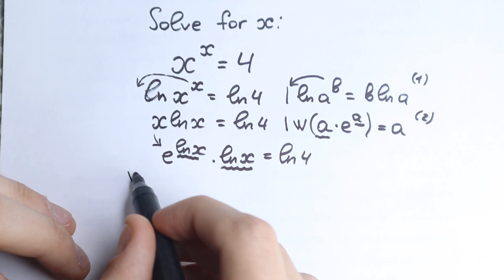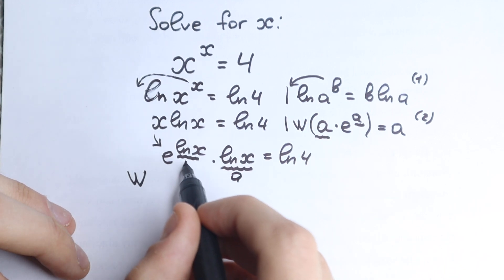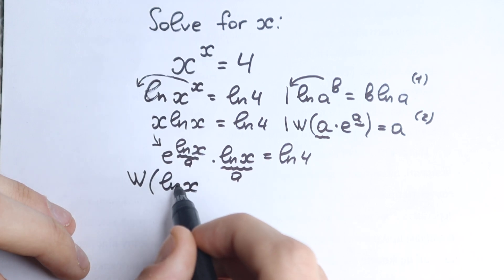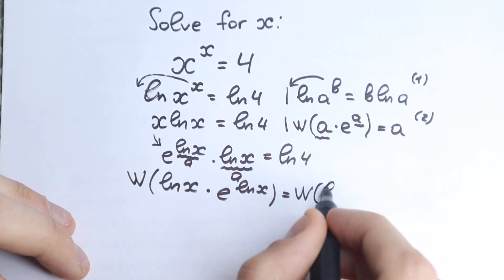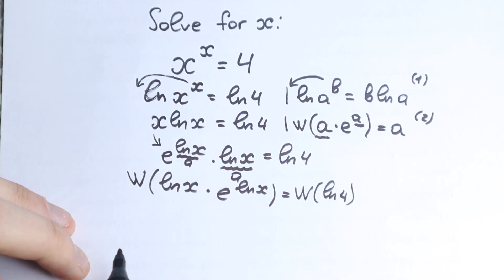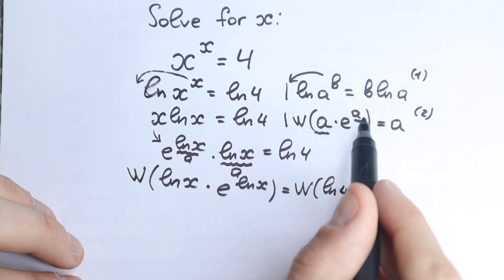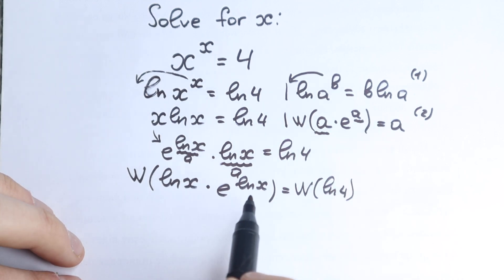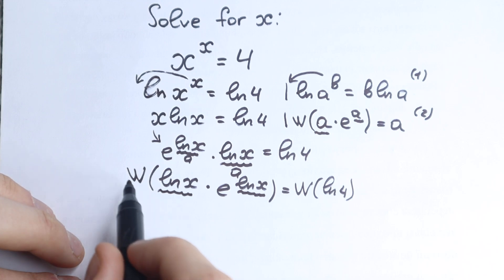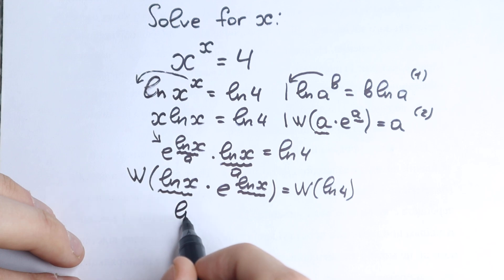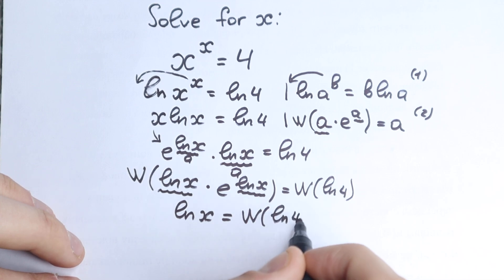So we can easily apply the Lambert W function. Lambert W of natural log x times e to the power natural log x — but we need to write a first, so this is: Lambert W of natural log x times e to the power natural log x equals Lambert W of natural log 4. Using the rule — Lambert W of a times e to the power a equals a — where in our case a equals natural log x, the whole left-hand side gives us natural log x equal to Lambert W of natural log 4.